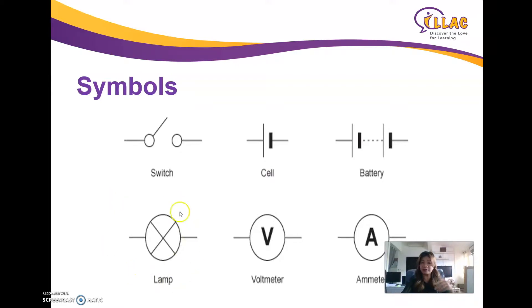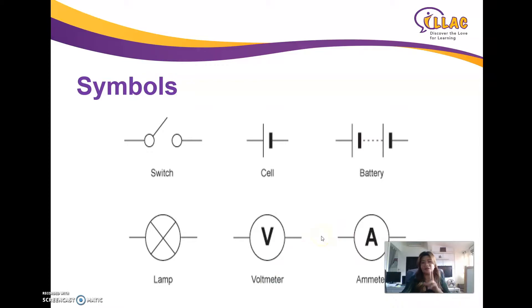A lamp will look like a circle with a cross in between — that's a lamp. Voltmeter and ammeter are hardly used in P5 science or even PSLE, so you can ignore them.